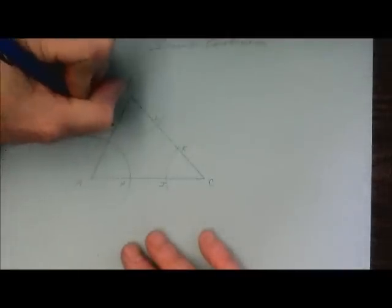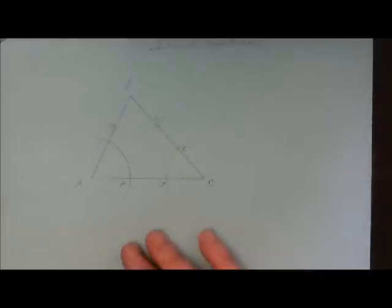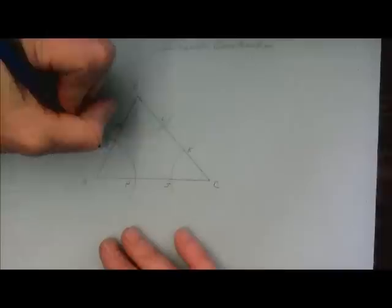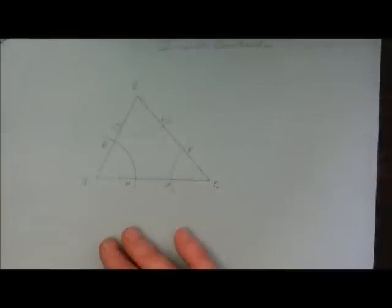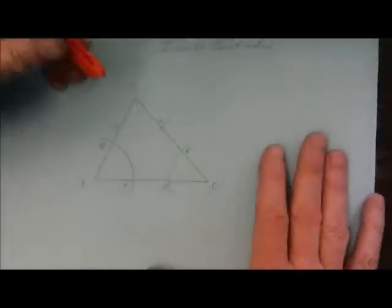So I'm going to go ahead and label my points of interest, and then we're going to go ahead and use points G and H to create the angle bisector for angle A.